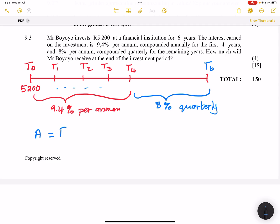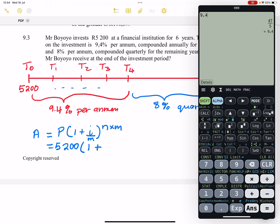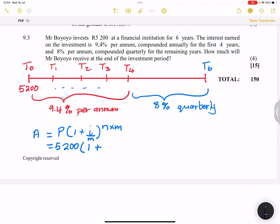So the first four years, that's P into one plus, now, we're talking about compound interest in this case. That's i to the exponent of m. And I want you to please note in this case that our interest rate is compounded annually. So the M value, our M value is one. So I'm going to say, well, we've got 5,200. That's invested at an interest rate of 9.4%.